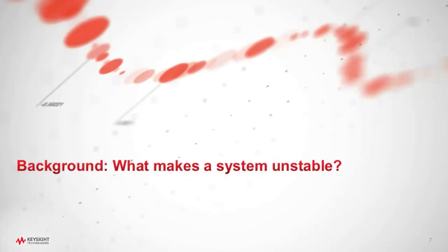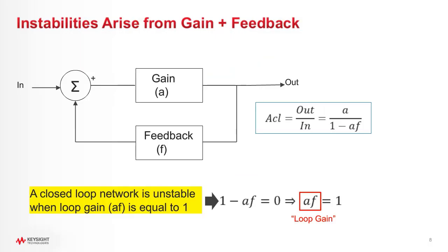Let's talk about what makes a system unstable. You can crack open your old college circuits textbook — mine is Sedra and Smith — where instabilities really arise from gain-feedback systems. We can derive a transfer function, and the bottom term, that AF term, is called the loop gain. When the loop gain gets to be one, the denominator goes to zero, the closed-loop gain goes to infinity, and we have an oscillation. That's the simplified, most basic view of oscillation.